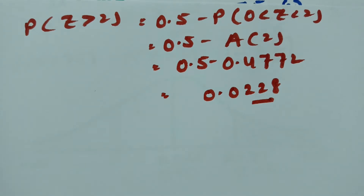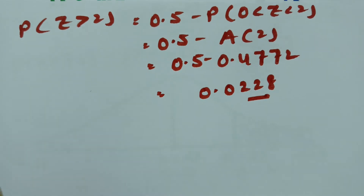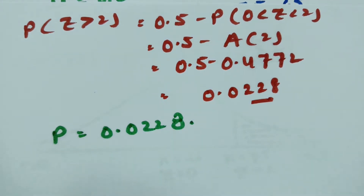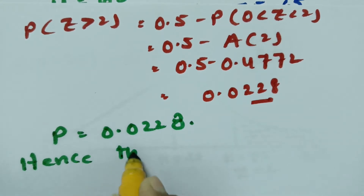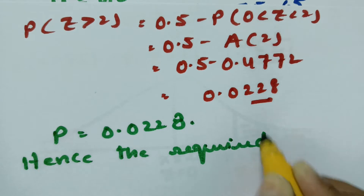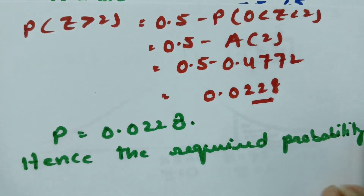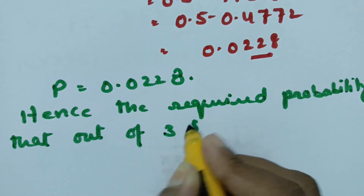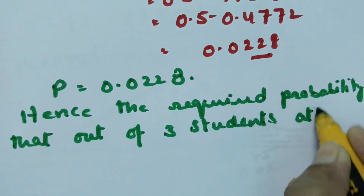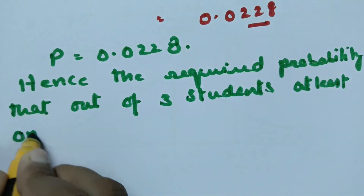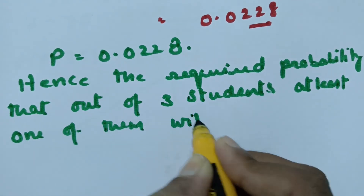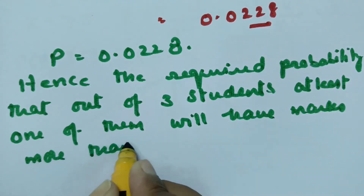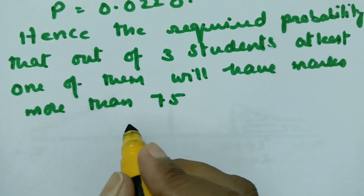Hence the required probability: p = 0.0228. Now we need the probability that out of 3 students, at least one will have marks more than 75. We apply the binomial distribution, with n = 3 and p = 0.0228.